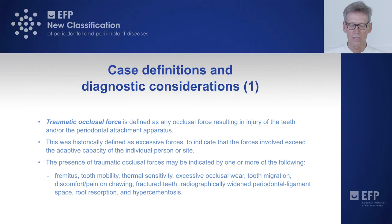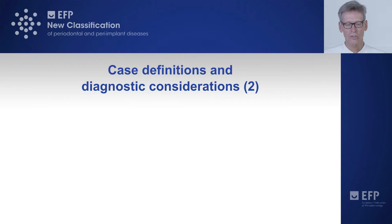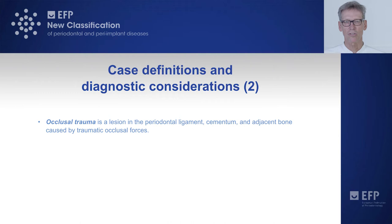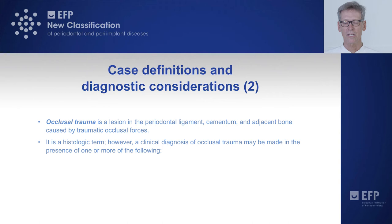A careful differential diagnosis has to be made. Secondly, the term 'occlusive trauma' refers to a lesion in the periodontal ligament, cementum, and adjacent bone caused by traumatic occlusive forces. It is a histological term; however, a clinical diagnosis of occlusive trauma may be made in the presence of one or more of the following.